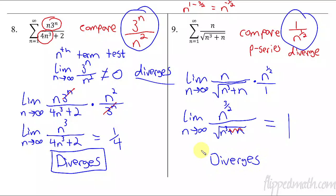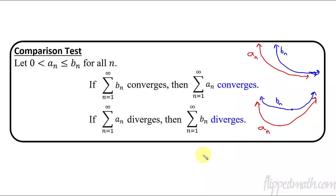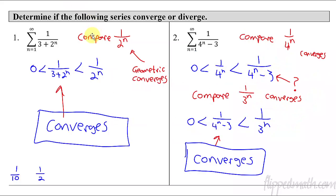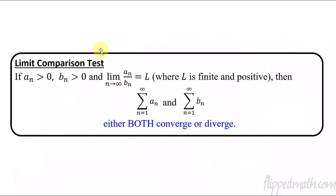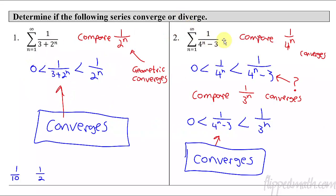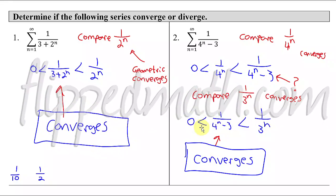I know that's a lot of stuff we just covered. So you have the original comparison test, which is where you have to know if one series is larger than the other, and that tells you the information. Then we have the limit comparison test. Make sure you know the difference between the two. I like the limit comparison test, but sometimes questions are asked in a way where you have to use the original comparison test — you'll see some of those on the test prep section. This is Mr. Bean signing off. Rock that mastery check, and I'll see you back in our next lesson.